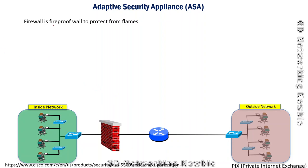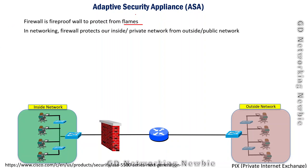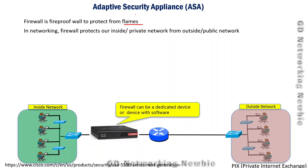In networking specifically, firewalls are something which protect our inside network from the outside or public or untrusted network. These firewalls can be dedicated devices or software. In this video we are specifically discussing the Cisco product that is ASA, and that Cisco product acts as a firewall for our network.